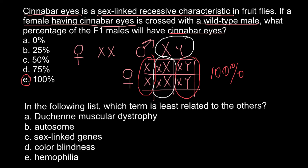Now we can move to the next question. In the following list, which term is least related to the others? Answer A: Duchenne muscular dystrophy. Answer B: Autosome. Answer C: Sex-linked genes. D: Color blindness. E: Hemophilia. The correct answer is B — Autosome — because the term that stands out is autosome. All three genetic disorders — A: Duchenne muscular dystrophy, D: Color blindness, and E: Hemophilia — can be found only on the X chromosome.